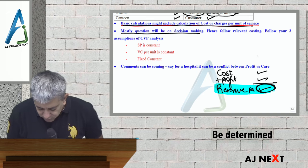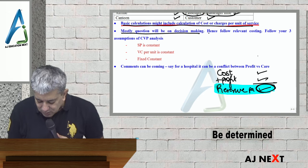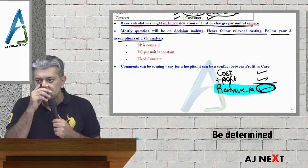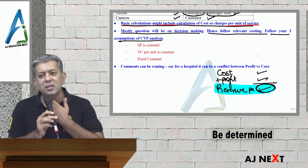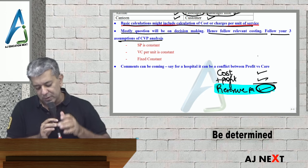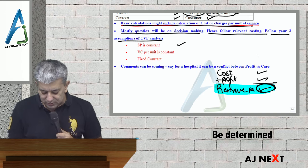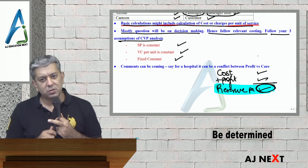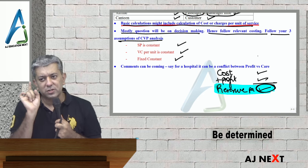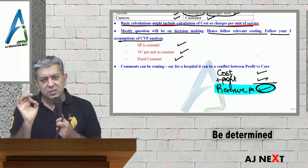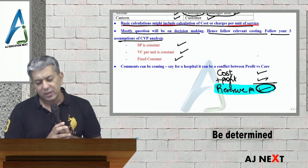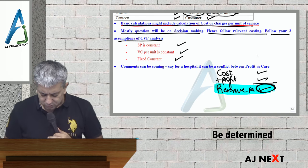Mostly questions will be on decision making. Hence follow relevant costing. Follow your three assumptions of CVP analysis — zyatar questions mein na aapko pooch sakte hain ki yeh karne ka ke nahi karne ka bla bla bla. Toh three assumptions: selling price is constant, variable cost per unit is constant, and lastly fixed cost is constant. Selling price is constant matlab fees ya charges will be constant.